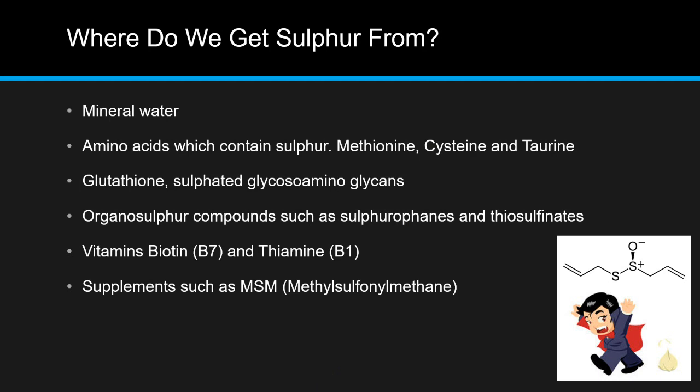Where do we get sulphur from? We get it from water — mineral water and tap water contain different amounts of sulphate. Amino acids containing sulphur include methionine, cysteine and taurine. Other sources are dietary glutathione, dietary sulphated glycosaminoglycans, organosulphur compounds such as sulphoraphanes found in broccoli, Brussels sprouts and cabbage, and thiosulphonates such as allicin found in garlic. Vitamins B7 and B1 contain sulphur, and supplements such as MSM (methyl sulphonyl methane) are taken to help with arthritis and pain.